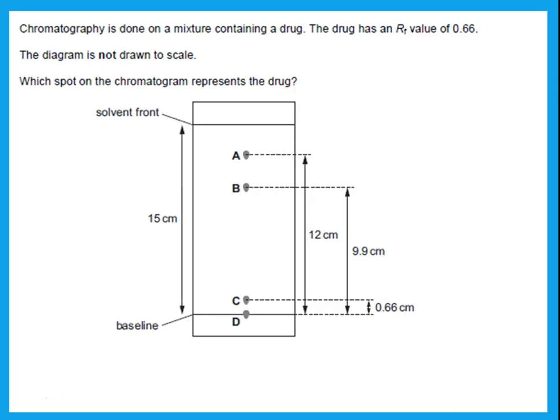Chromatography is done on a mixture containing a drug with RF value 0.66. The diagram gives measurements: solvent front at 15. RF of A = 12/15, RF of B = 9.9/15, RF of C = 0.66/15, RF of D = 0 (didn't move). Whichever spot gives 0.66 is the drug — that is spot B.